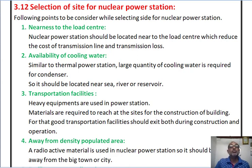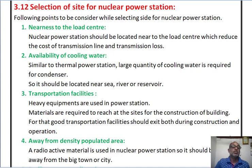Second, availability of cooling water. As we have already seen in thermal power stations, a large amount of cooling water is required for the condenser. The same requirement of cooling water for the condenser applies to nuclear power stations as well. So, the nuclear power station should be located near to a sea, river, or reservoir.